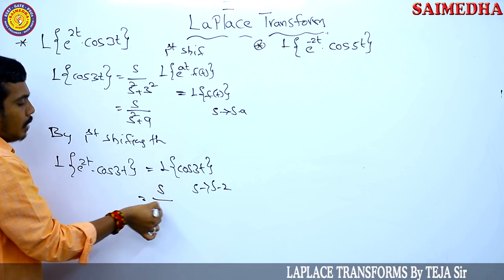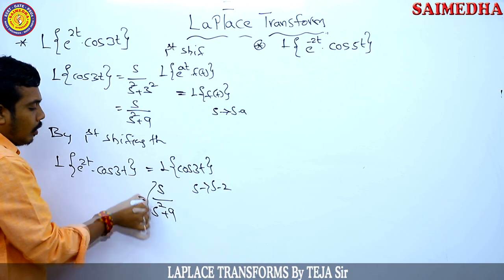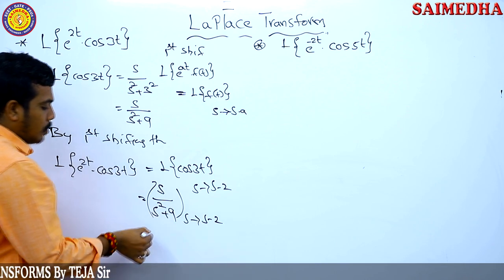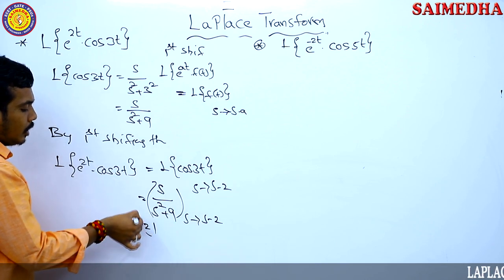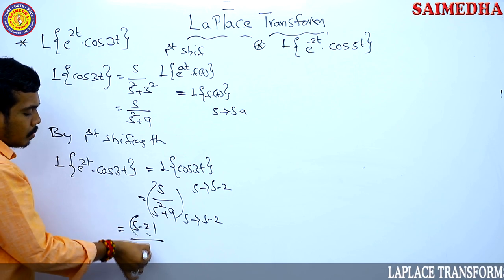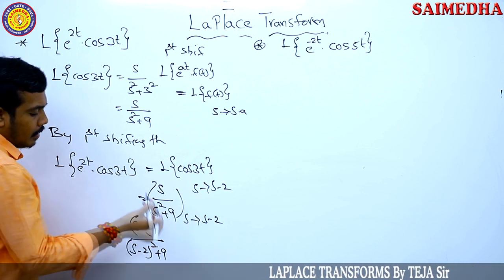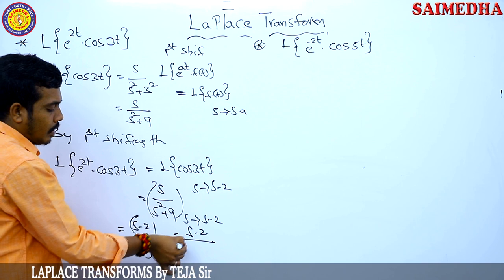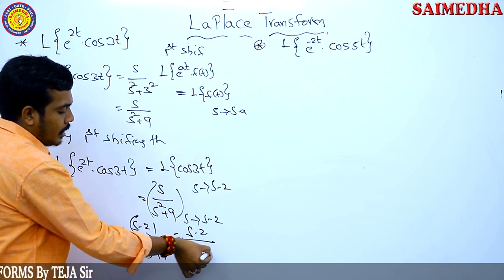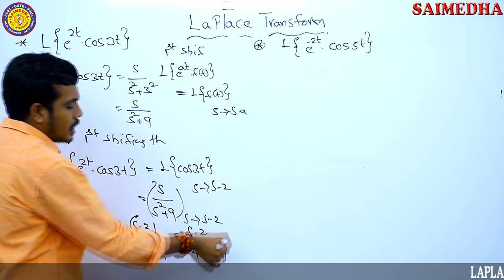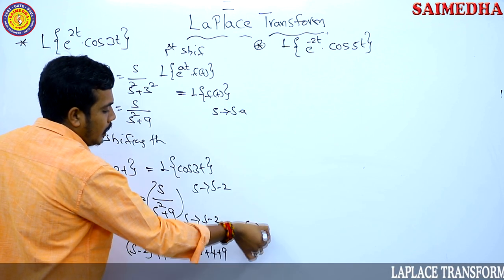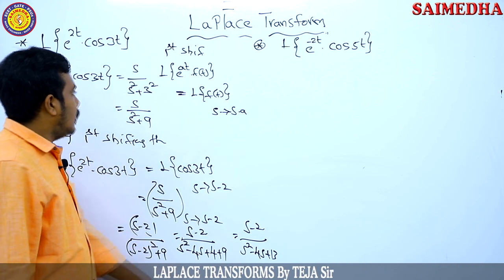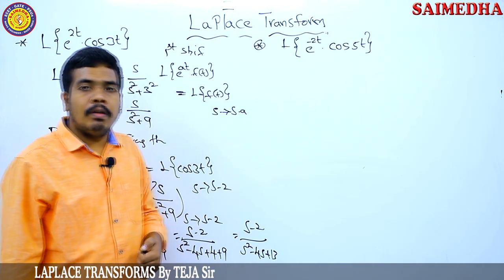The Laplace transform of cos(3t) is s/(s²+9). Replacing s with s minus 2 gives (s-2) divided by (s-2)² plus 9, which simplifies to (s-2) divided by s² minus 4s plus 4 plus 9, giving (s-2) divided by s² minus 4s plus 13. This is the Laplace transform of e^(2t) into cos(3t).